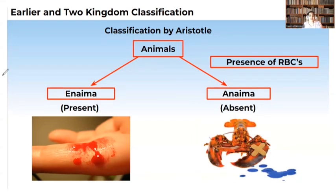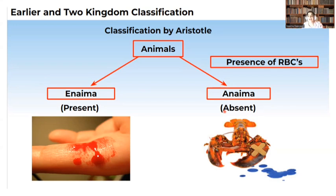In the case of animals, Aristotle classified the animals into Enema and Anema. Enema refers to organisms having RBCs, where the blood is red in color. Whereas when RBCs are not present, or when the blood is not red in color, those organisms were classified as Anema.